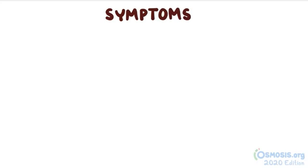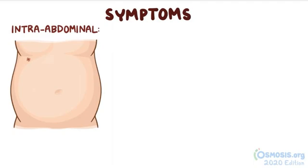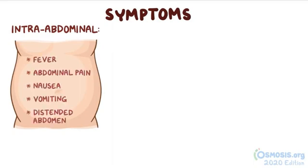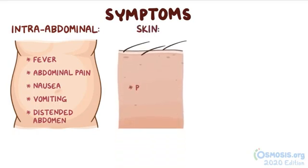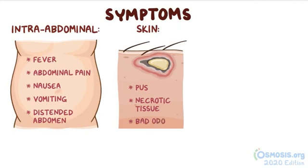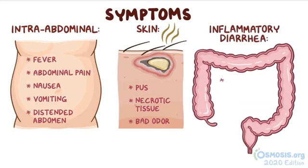Symptoms vary widely depending on the site of the infection. For example, intra-abdominal infections may cause fever, abdominal pain, nausea, vomiting, and a distended abdomen. With skin infections, there's pus, necrotic tissue, and a bad characteristic odor, characteristic of anaerobic infections. And with inflammatory diarrhea, there's abdominal pain and watery diarrhea.